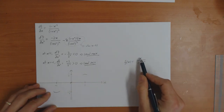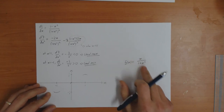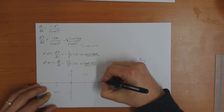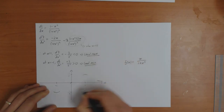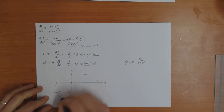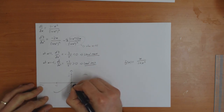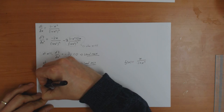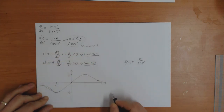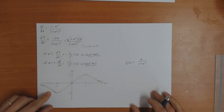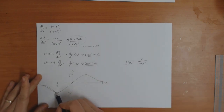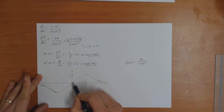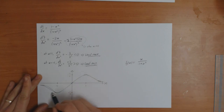The function also passes through the origin since f(0) equals zero. If x is very large, we can ignore the 1 in the denominator, and the function looks like 1 over x, so it decays toward zero for large x. Joining up all these points gives a good graph. The function goes to zero at plus and minus infinity, passes through zero at x equals zero, has one local maximum at x equals 1 — which is in fact a global maximum — and one local minimum at x equals minus 1.